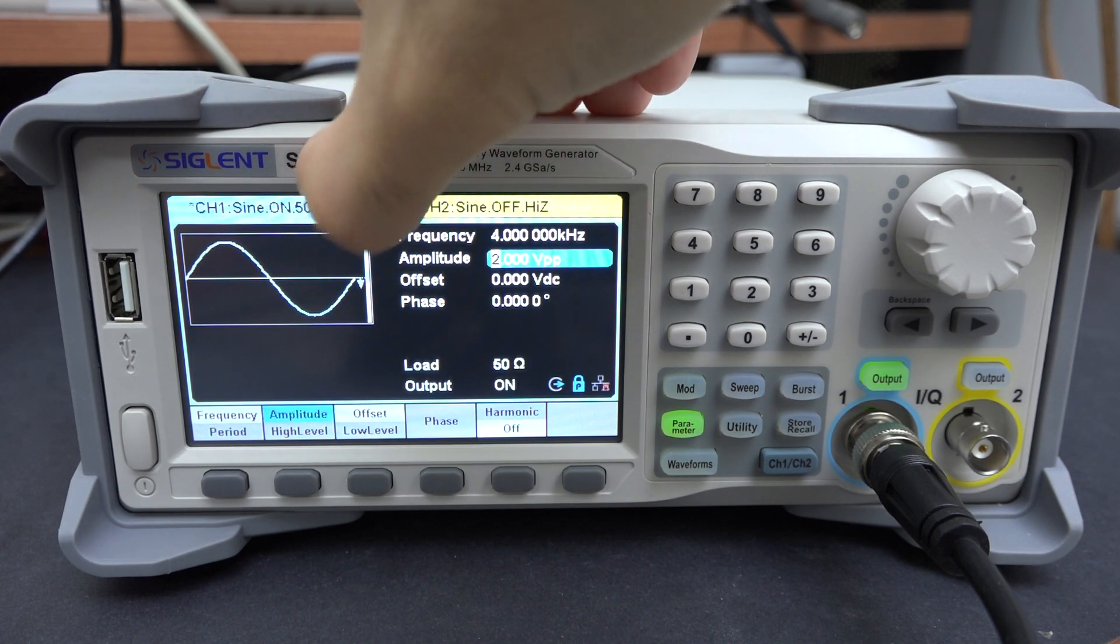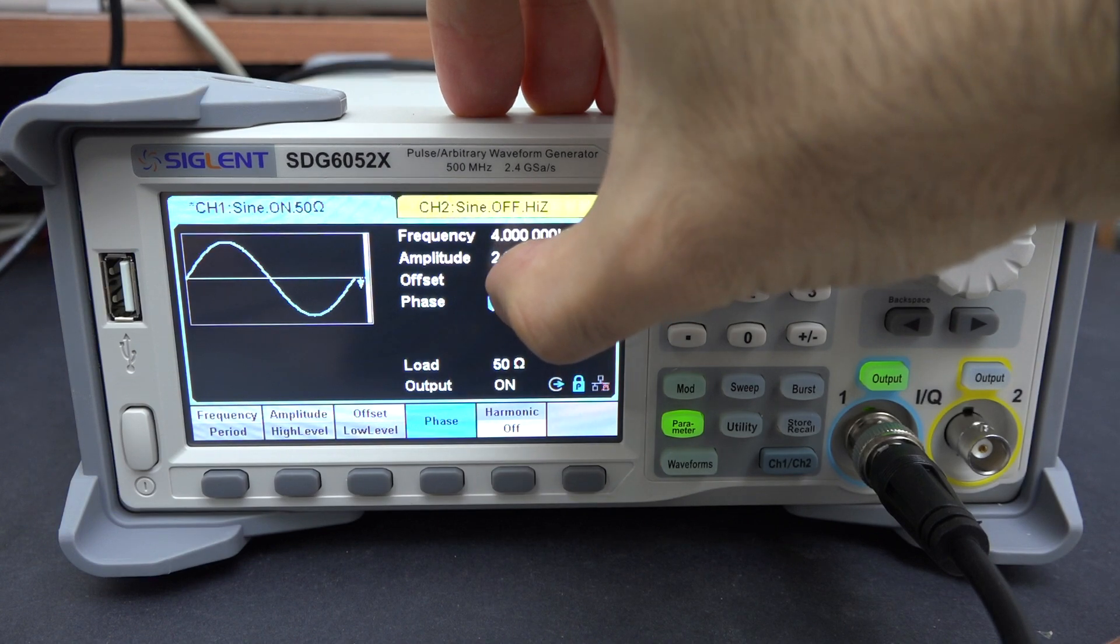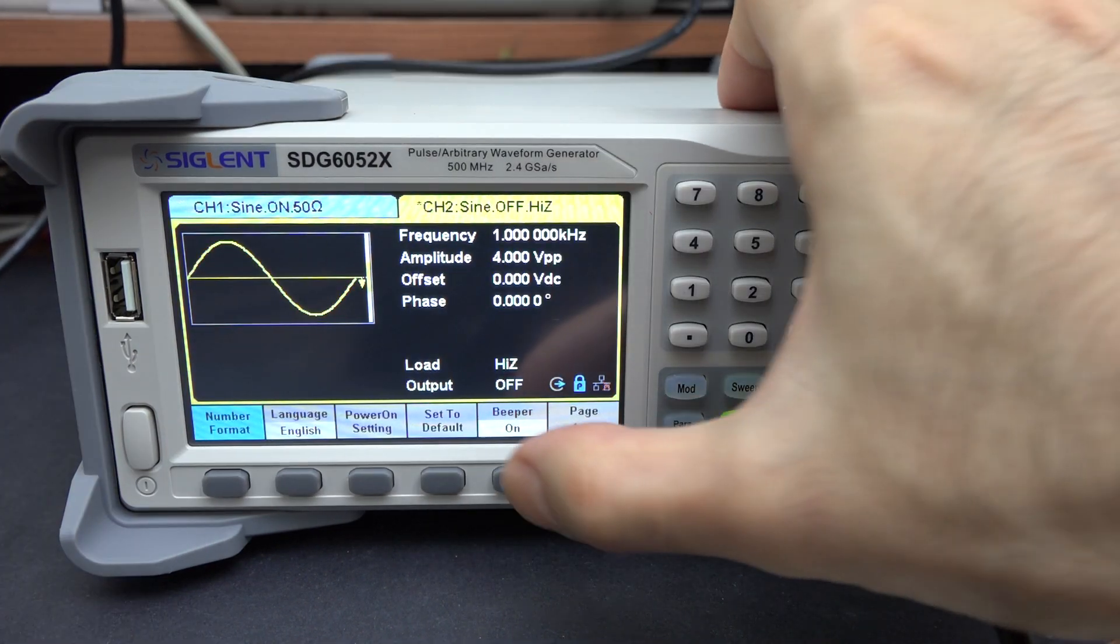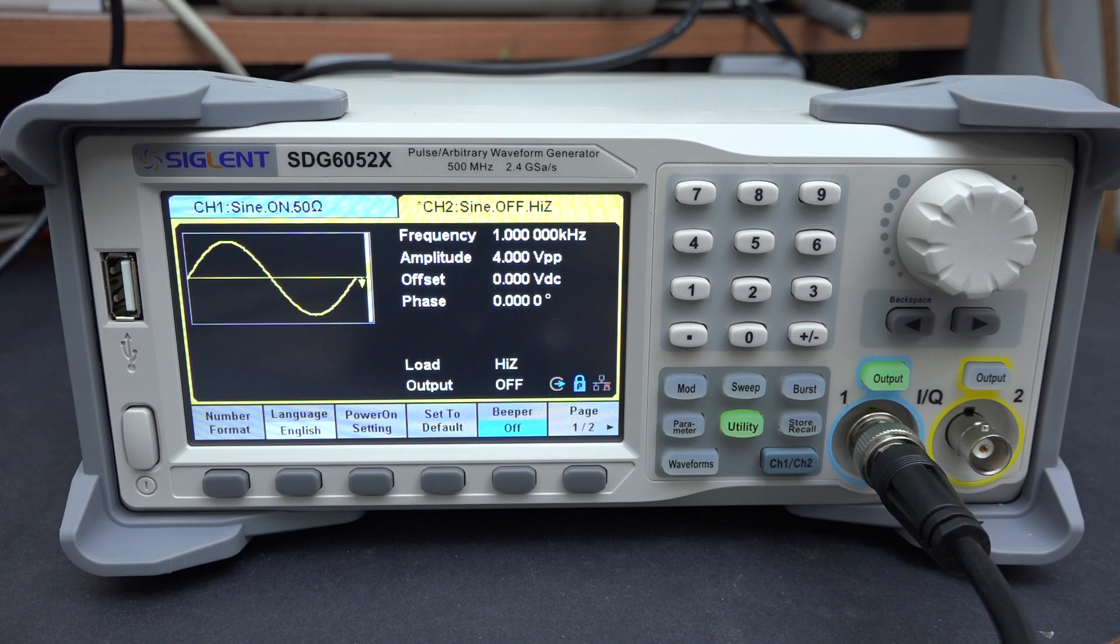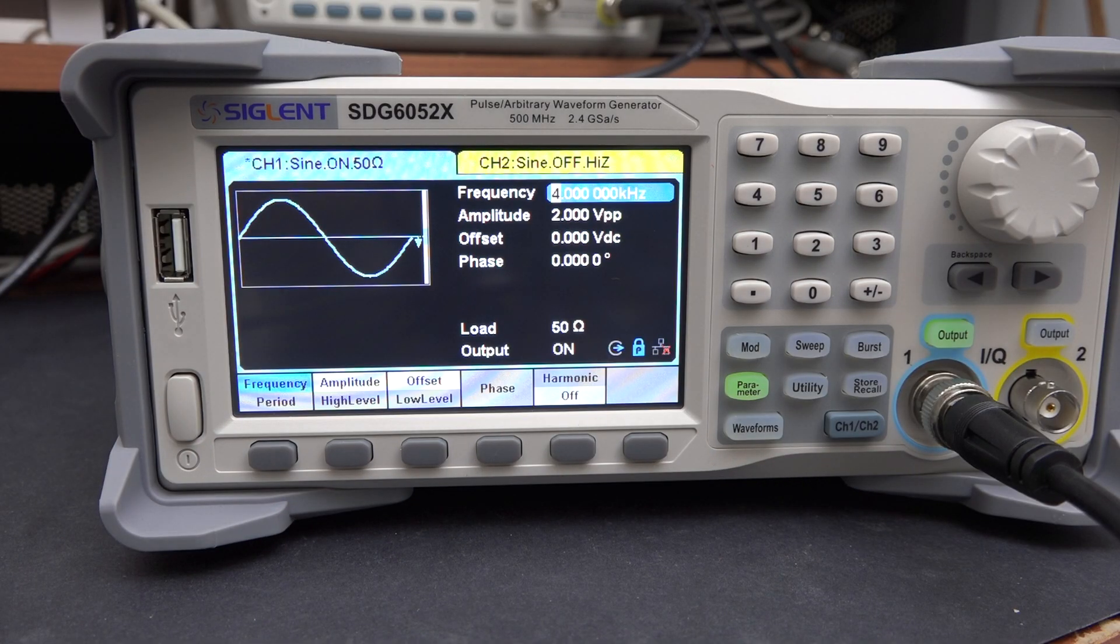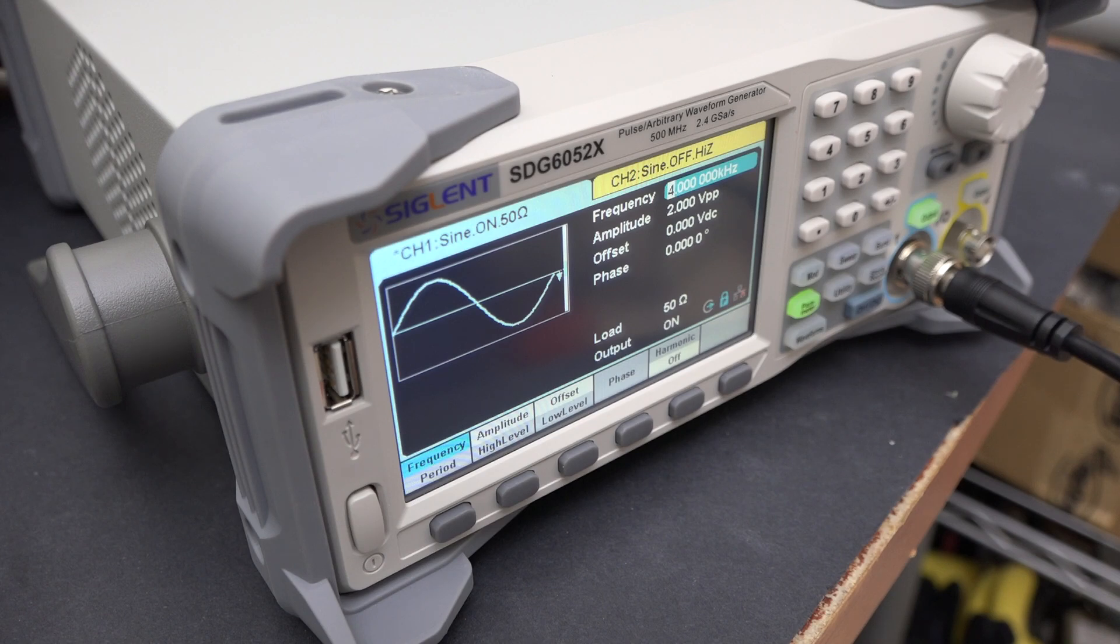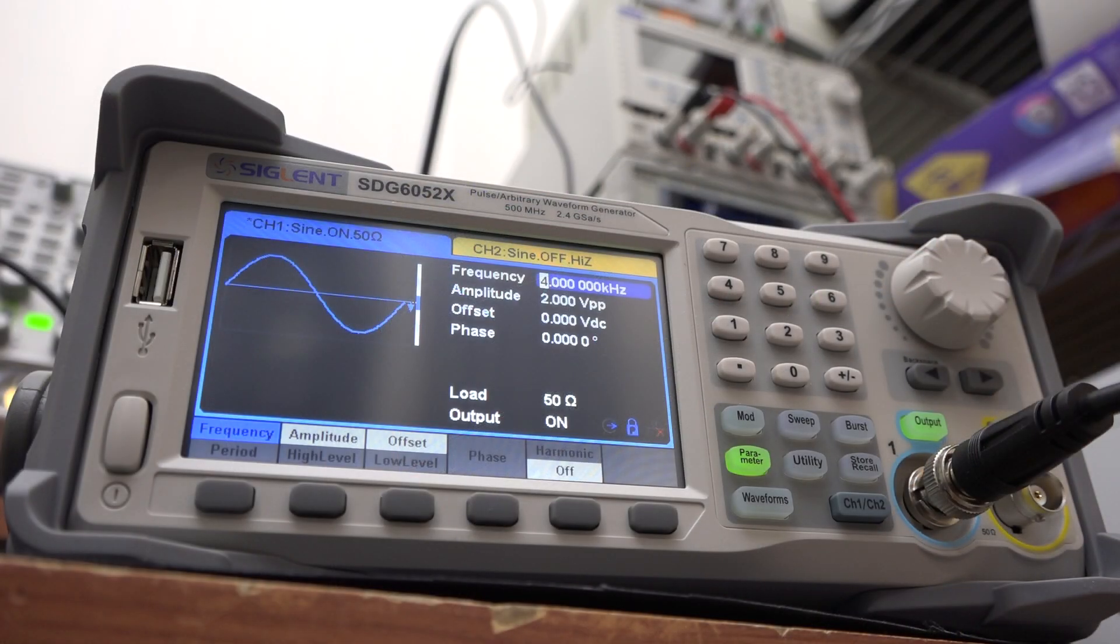One of the first things I noticed is that there's an annoying beeping sound whenever you do anything, and fortunately you can disable it. The screen resolution is 480x272, and it's reasonably bright. No problems with viewing angles from the top and the sides, but the colors start looking slightly different when viewed from a sharp angle down below. It's not a problem, everything is still perfectly readable.